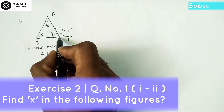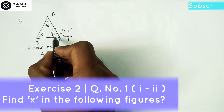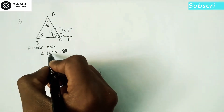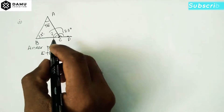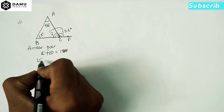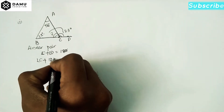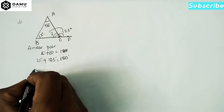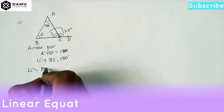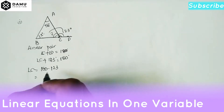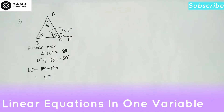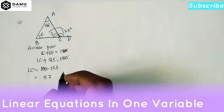The line is making 180 degrees, so 123 plus angle C plus angle D equals 180 degrees. Angle D is 123 degrees, so angle C will be equal to 180 minus 123, which gives us 57 degrees.